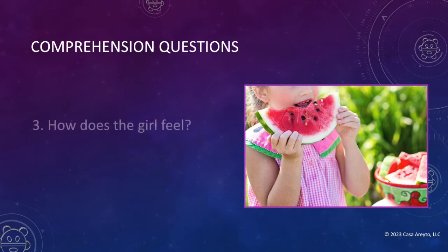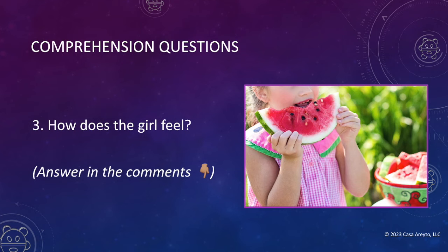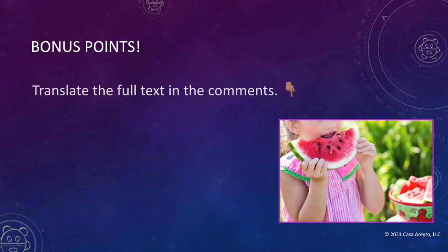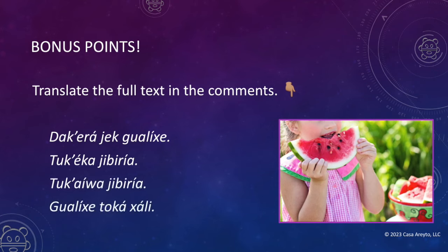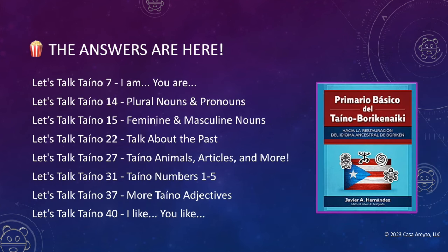Now let's look at the final comprehension question: how does the girl feel? I'm going to do something really mean today — I'm not going to give you the answer. As homework, I want you to go back to the text and look for any word that describes feelings, and then write your answer in the comments below. If you want to do a bonus activity, you can translate the full text and put it in the comments. Here it is one last time for you to take a look at. Tune in to next week's episode where I will provide the answer to the last comprehension question and the bonus activity.